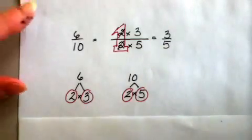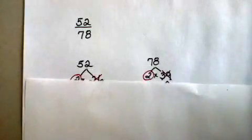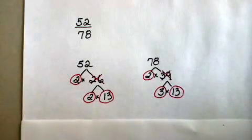Let's try that again. I have a second fraction, 52 over 78. This one's a little harder. Again, the first step is to do the prime factors of each number, which I have done for you.